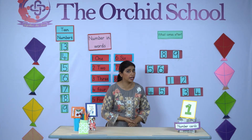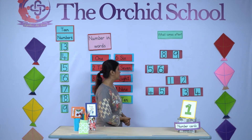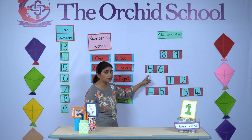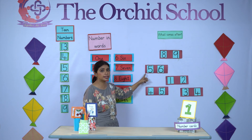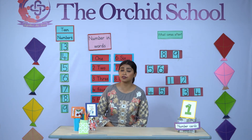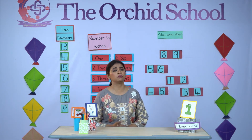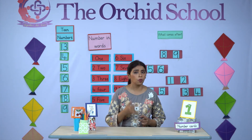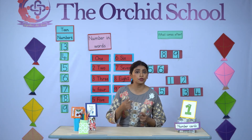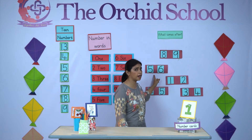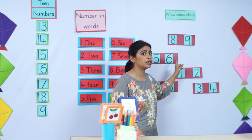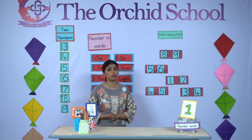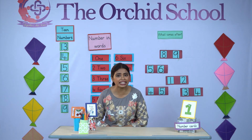What will come after 8? 9. Then, I have number 5. What number is it? Number 5. Now tell me, what comes after number 5? Let's start counting: 1, 2, 3, 4, 5 — 6. Well done! So what number will come after 5? 6. Very good.